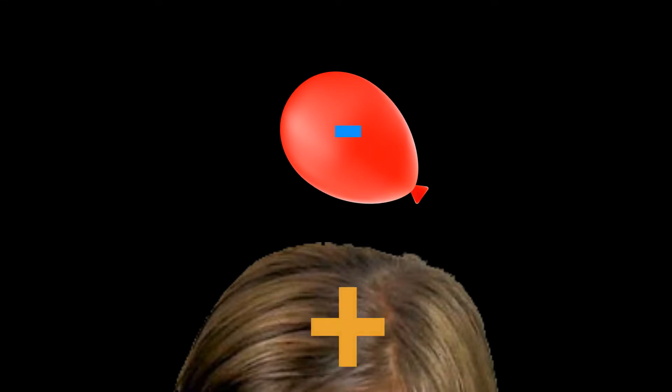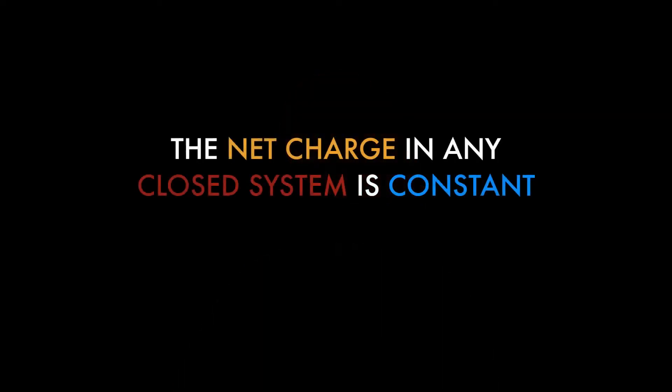When you pull the balloon away from your head, the charges retract, making your hair stand up. If the system of the balloon and your hair had a total charge of zero before the process, you would have created charges equal in magnitude but opposite in sign. The principle in effect when you rub your balloon against your hair is known as conservation of charge. Conservation of charge states that the net charge — the sum of all charges in any closed system — is constant.